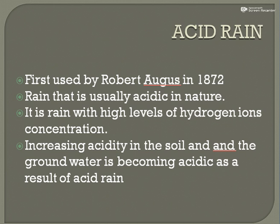Let us have a look at the second point: rain that is usually acidic in nature. Third point: it is rain with a high level of hydrogen ion concentration. When we look at pure rainwater, pure rainwater is neither acidic nor alkaline — it is neutral, having a pH of 7.